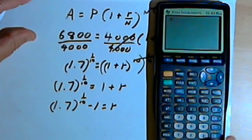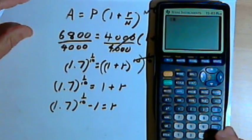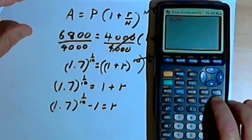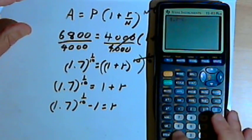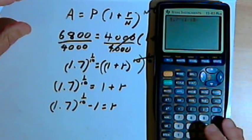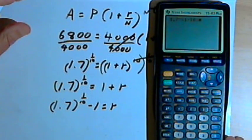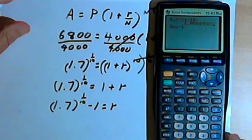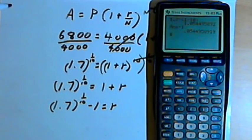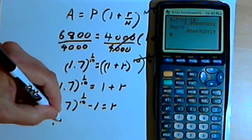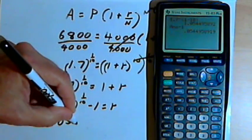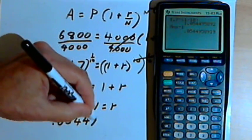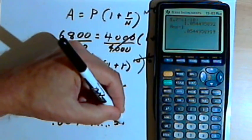So now we need a calculator. I want 1.7 raised to the 1 divided by 10. When I get that answer, I want to subtract 1 from it. And what I end up with is 0.05449, and that equals r.